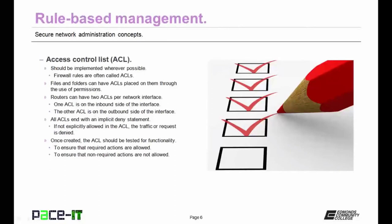The ACL should be implemented wherever possible. Firewall rules are also often called ACLs. Files and folders can have ACLs placed on them through the use of permissions. As a general rule, routers can have two ACLs per network interface — one on the inbound side and one on the outbound side — and the two ACLs don't have to have the same rules. All ACLs should end with an implicit deny statement, meaning if it's not explicitly allowed, the traffic or request is denied. Once created, the ACL should be tested thoroughly for functionality.